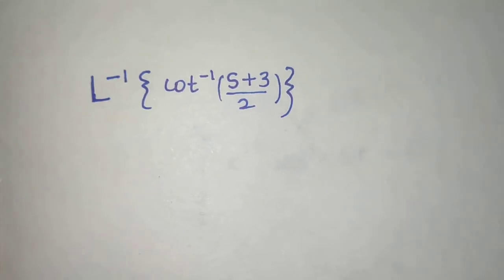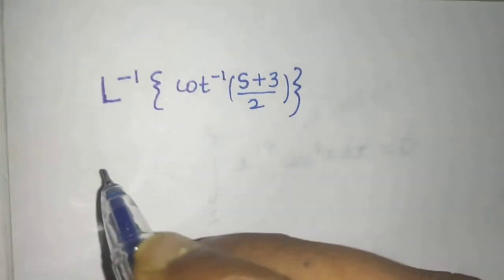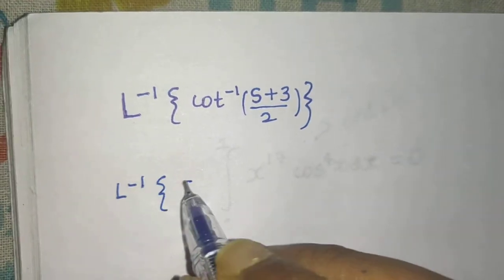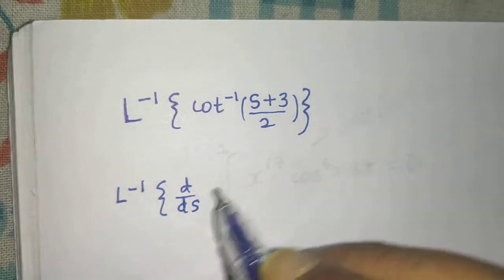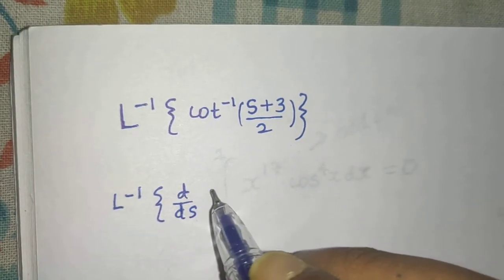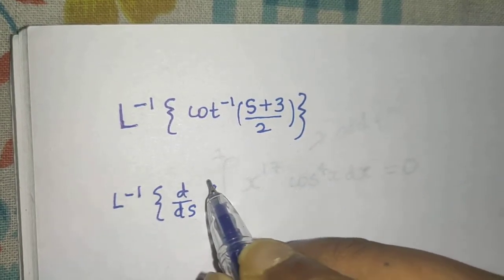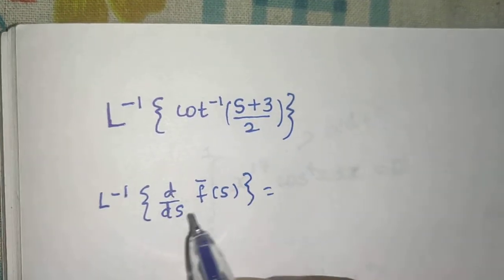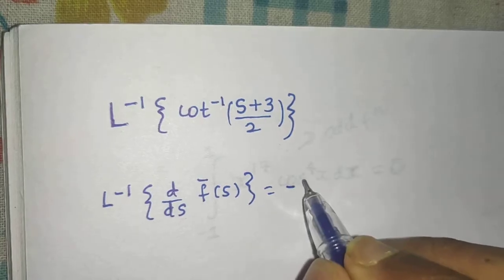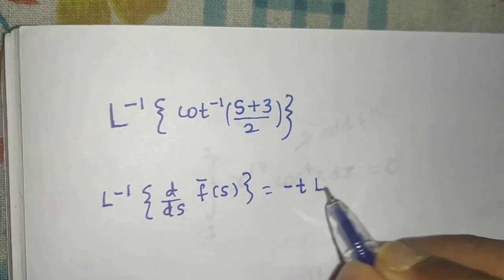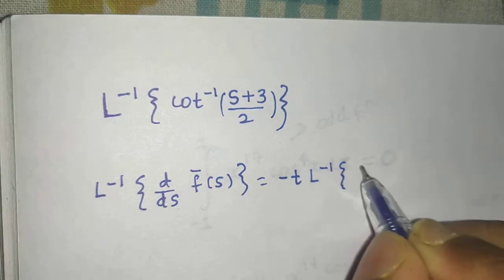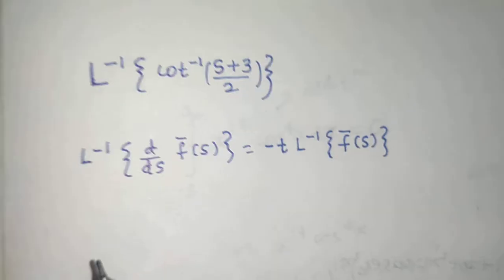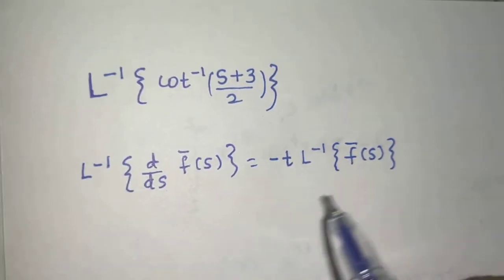We will use a rule: the Laplace inverse of the first derivative of f̄(S) equals minus T times the Laplace inverse of f̄(S). That is, L^(-1){d/dS f̄(S)} = -T L^(-1){f̄(S)}.